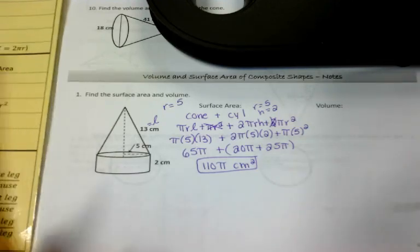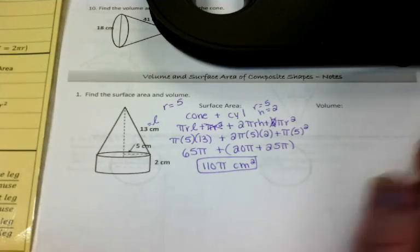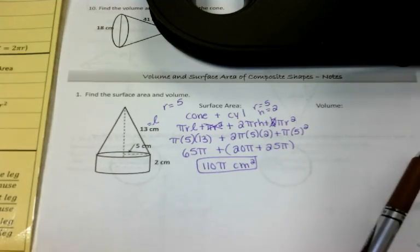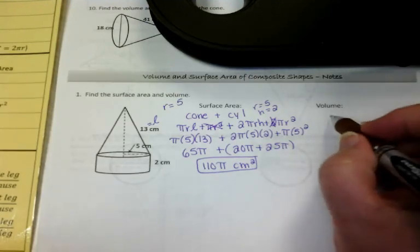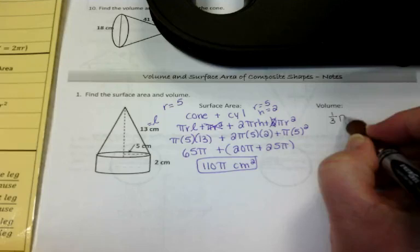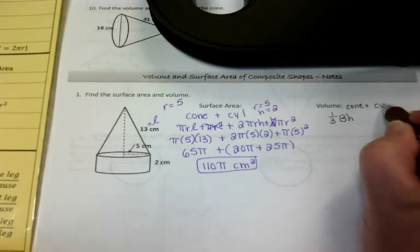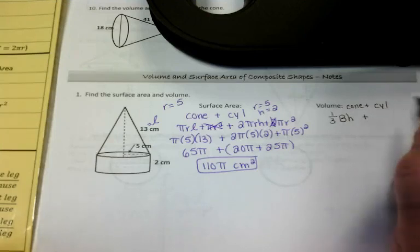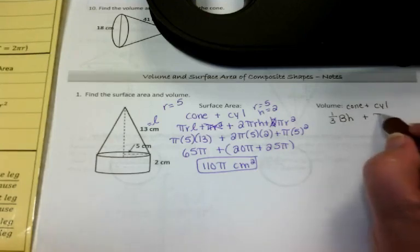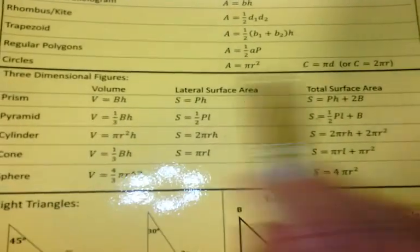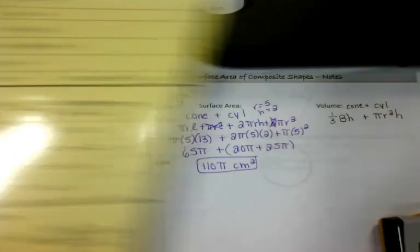Now let's go to volume. The volume of a cone is 1/3 bh. That's for the cone. And the volume of the cylinder is pi r squared h. By the way, I'm using my formula chart because all these formulas are right here, and you have access to those.